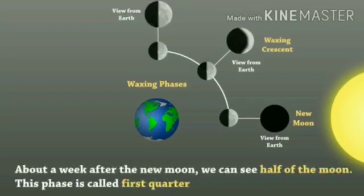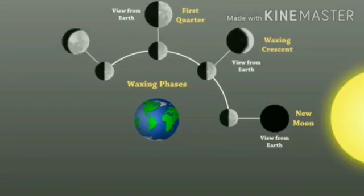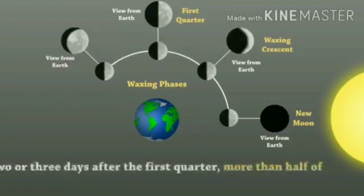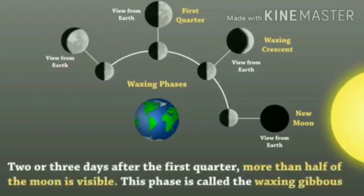About a week after a new moon we can see half of the moon. This phase is called the first quarter, followed by the waxing gibbous phase as the moon continues to gain illumination.